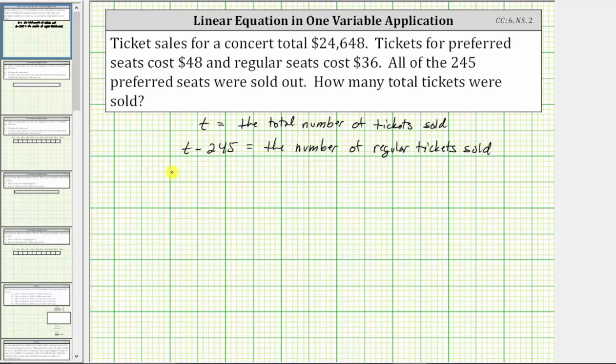Which gives us the equation 24,648, the total value of all the tickets must equal 48 times 245, which gives us the value of the preferred tickets sold, plus 36 times the quantity t minus 245, which gives us the value of the regular tickets sold.